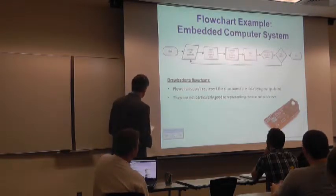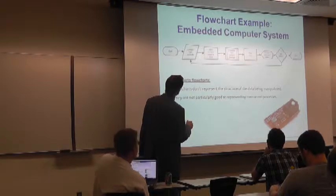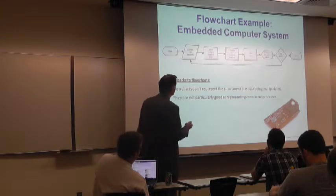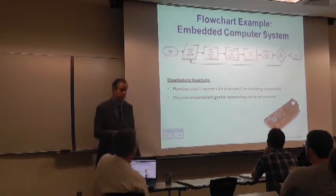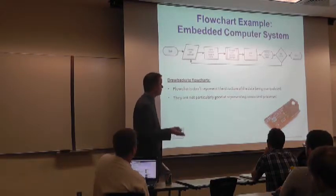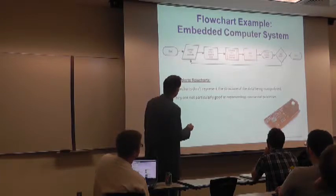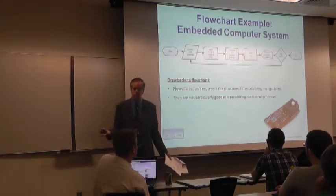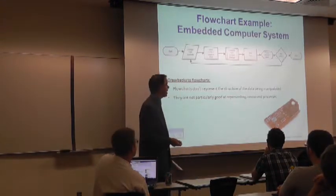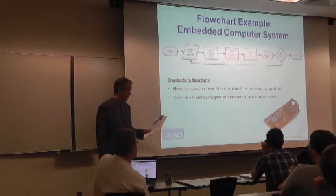Here's an example: an embedded computer system that's going to monitor the light level of an environment. A flowchart makes it very intuitive to understand what's going on. We start here, sample the light strength, store the sample value into an array. Then compute light sample average — you see it has the little double bars on the side; in the world of flowcharts this calls another flowchart. Our wait time is about a millisecond. We display the average value, check to see if the user has pressed a key — if so, we come back and do it all over again; if not, we're done.